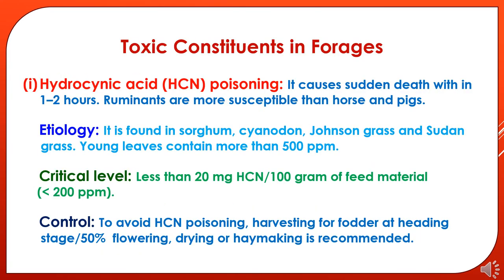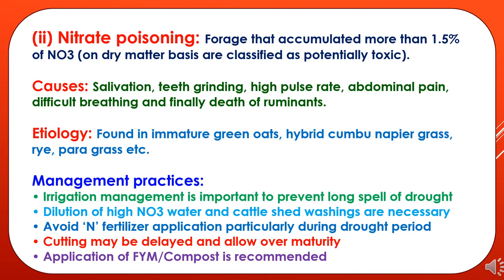Now we will study toxic constituents in forage crops. The first is hydrocyanic acid (HCN) poisoning, which causes sudden death within one to two hours. Ruminants are more susceptible than horses and pigs. It is found in sorghum, Cynodon, Johnson grass, and Sudan grass. Young leaves contain more than 500 ppm of HCN. The critical level is less than 20 mg HCN per 100 grams of feed material, which is less than 200 ppm.